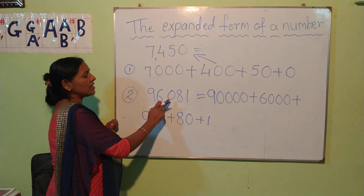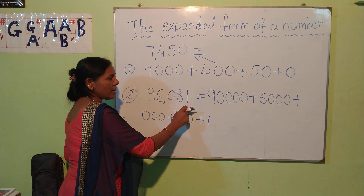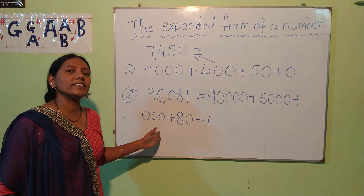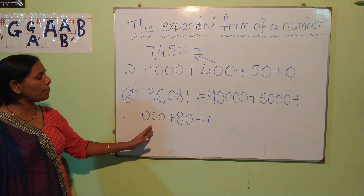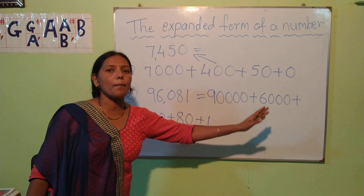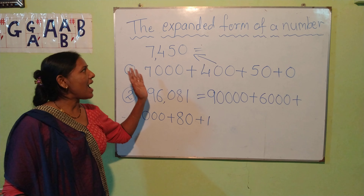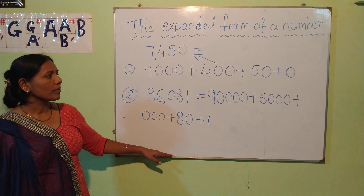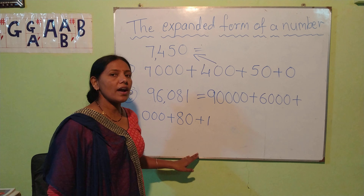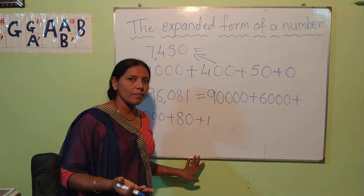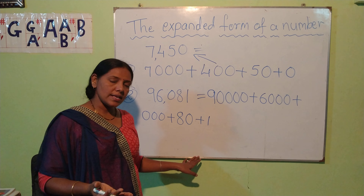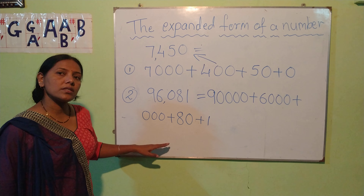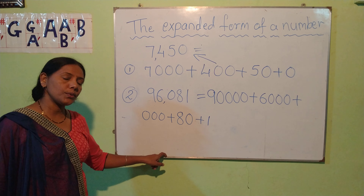96,081. So this is called the expanded form — that means we are finding the place value of that number by expanding it. I hope you all have understood it. Okay children, we will practice on these terms today. Thank you.